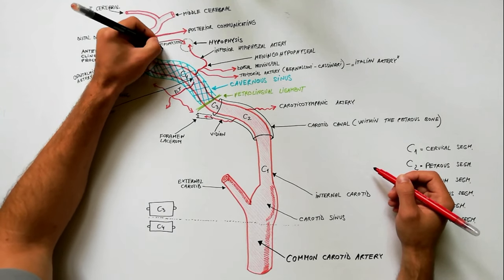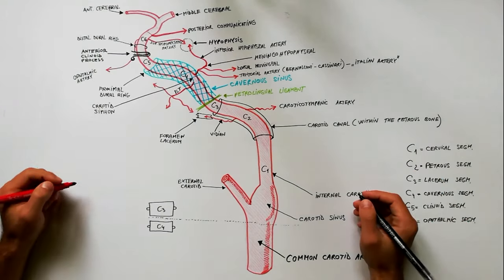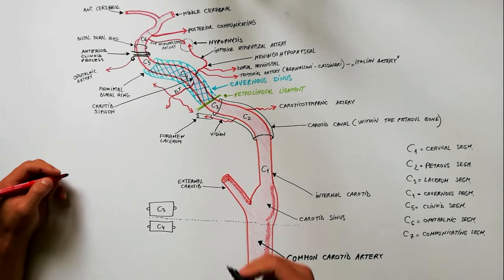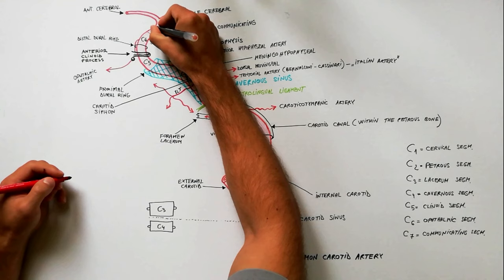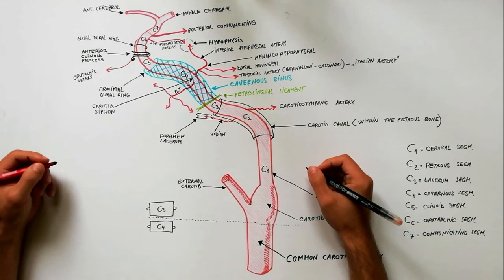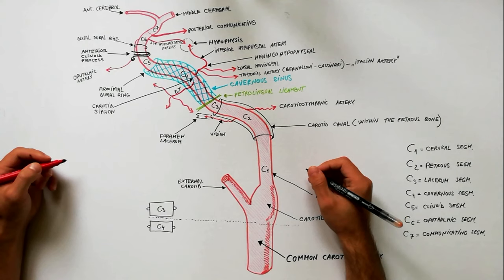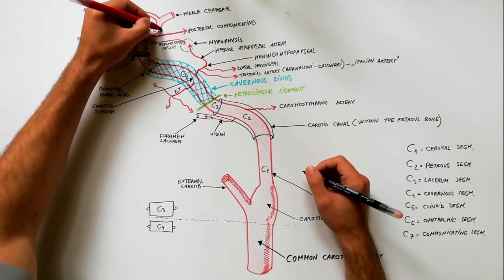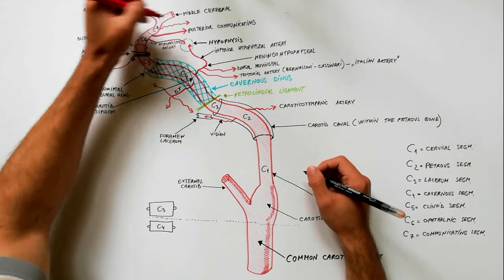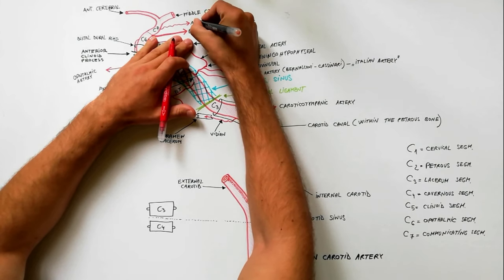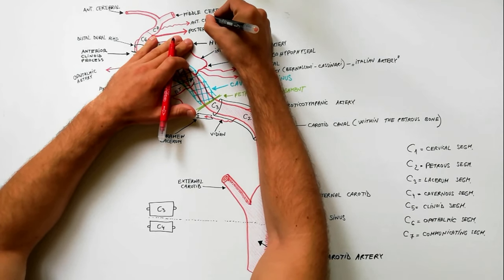The last segment of the internal carotid artery is C7, or the communicating segment. This segment extends from the origin of the posterior communicating artery to the bifurcation of the internal carotid artery. The posterior communicating artery is a branch of the C7 segment, as is the anterior choroidal artery.